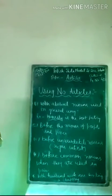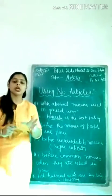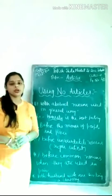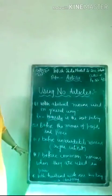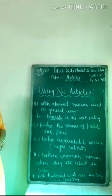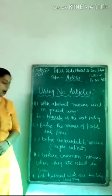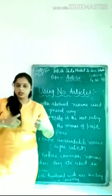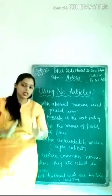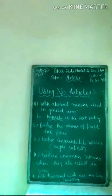Before common nouns when they are used in a pair, we do not use any article. For example, 'Both husband and wife are working in a company.' Husband and wife — used as a pair — so we do not use any article.